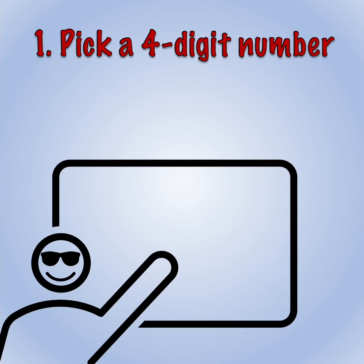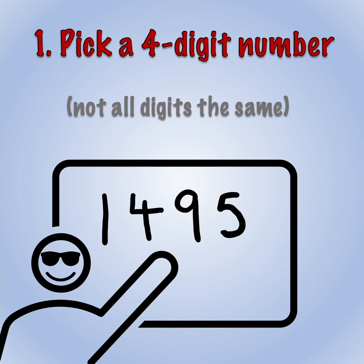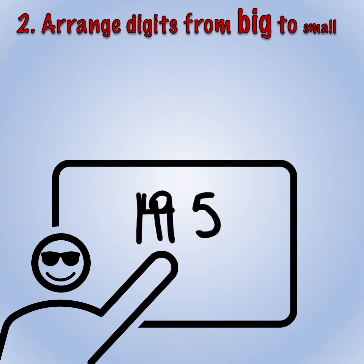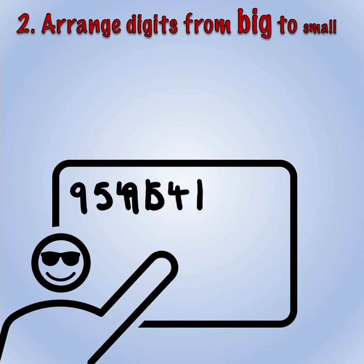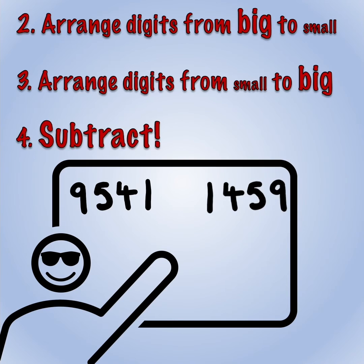Start by picking any four-digit number where the digits aren't all the same. Let's pick 1495. Then arrange the digits from large to small to make the highest possible number, and again from small to large to make the lowest possible number. Subtract the two and you end up with a new number — add any leading zeros if you need to so you always have four digits.